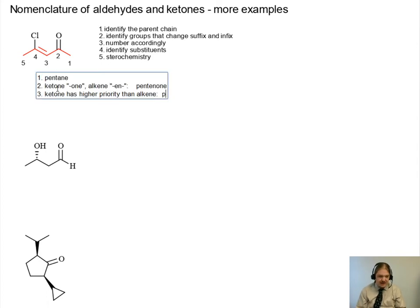So that means now we have a pent. And this is important. I'm going to put the locants for the ene and the own inside the parent chain name. If we try to put them up front, we get confused as to which one goes where. And then we need to identify the substituents. We have a chloro substituent and it's on carbon-4. So now we're at 4-chloropent-3-en-2-one.